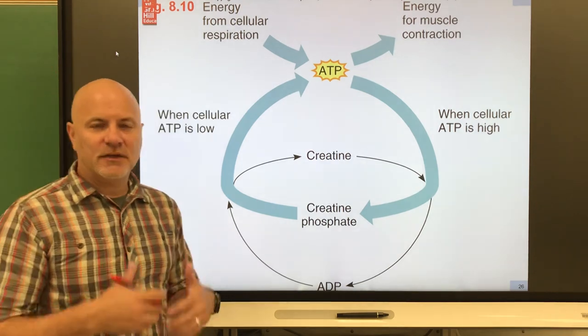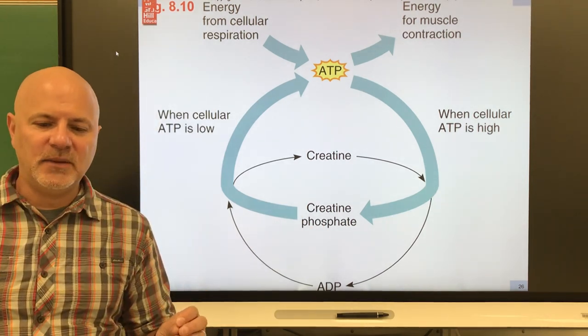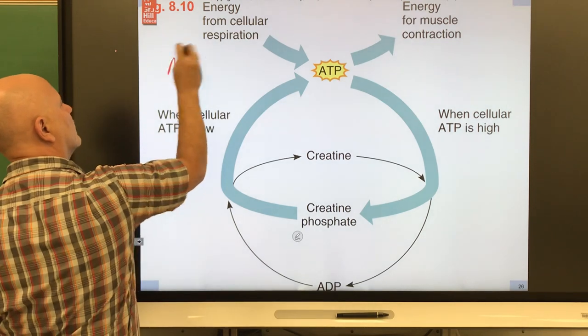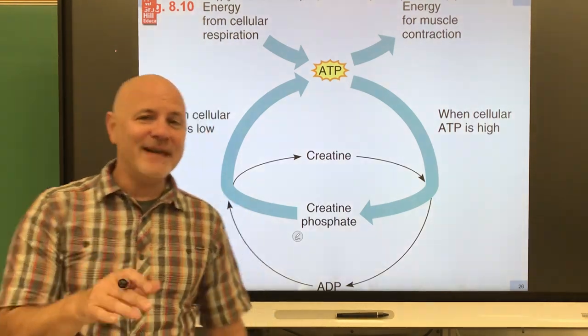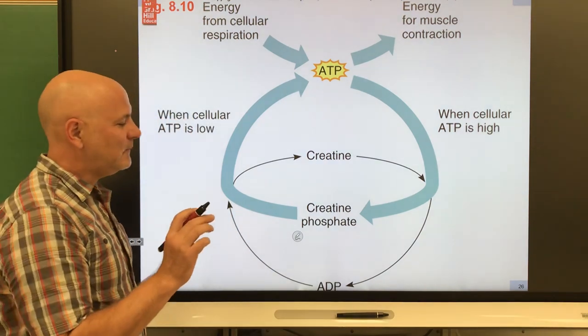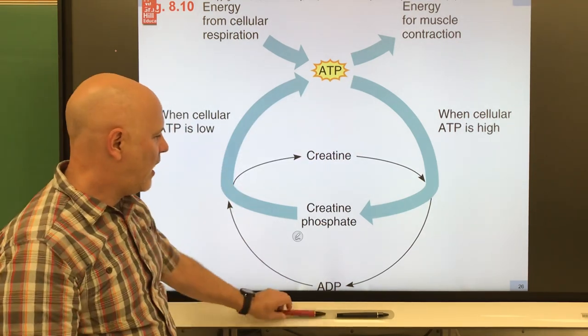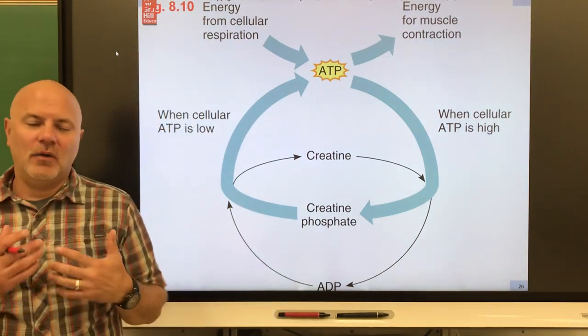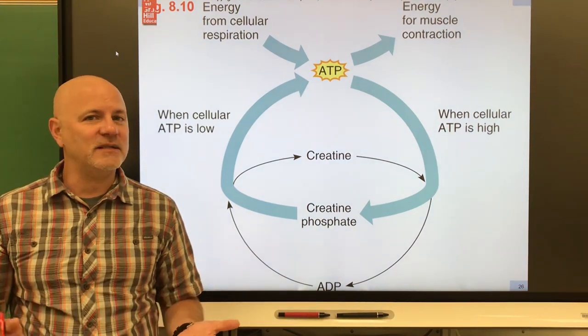Next, so once we start breaking down ATP, we can restore that ATP through this guy right here called creatine phosphate. So we break down ATP, ATP gets broken down into ADP and energy. So ATP gets broken down into ADP, a phosphate ion, and then energy. Now we have a phosphate ion on creatine phosphate and it just literally just adds a phosphate onto ADP to restore ATP. So this can give us like another 15 seconds worth of energy. So if you're doing any exercise, you're going to burn through all your stored ATP and creatine phosphate in about 20 seconds.